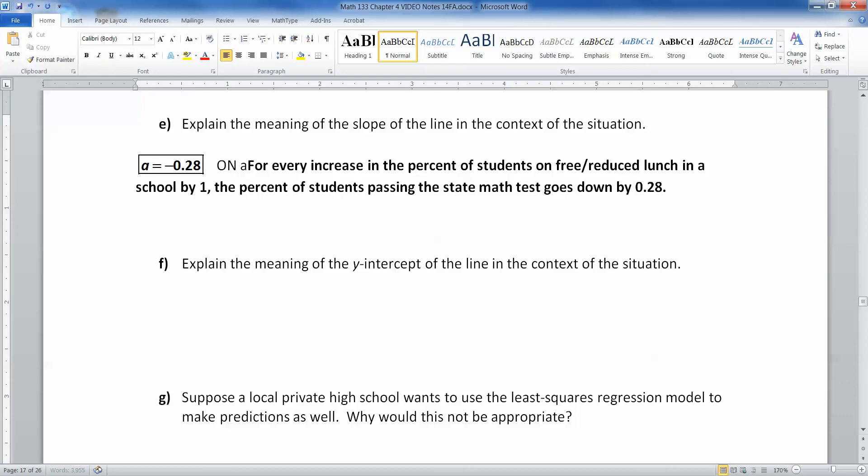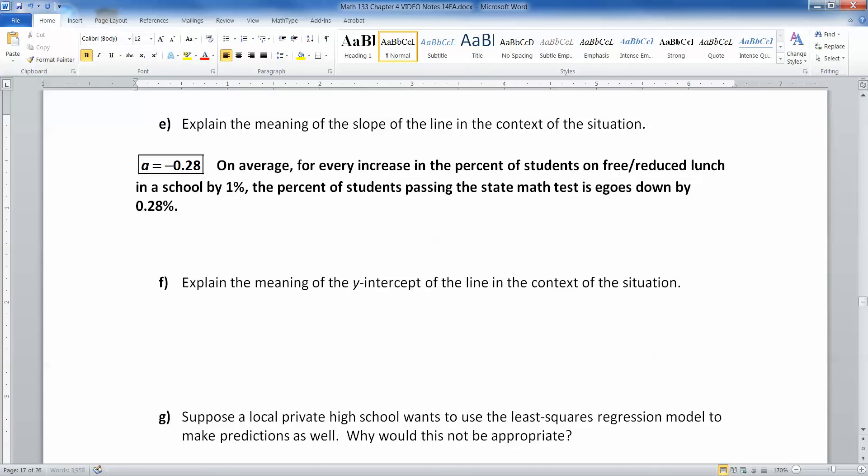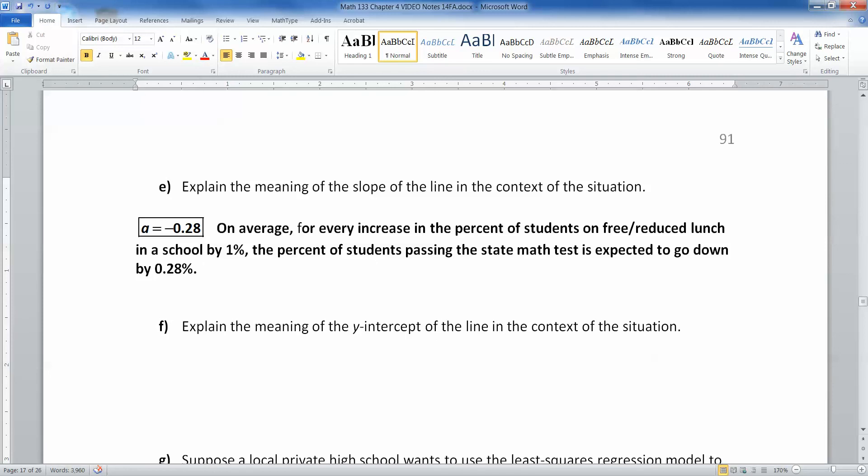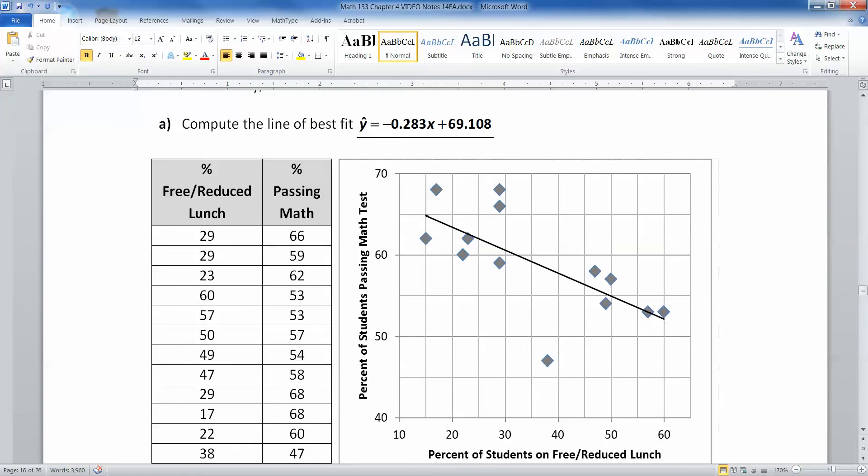So let me go down here and clean this up a little bit. So we would say on average for every increase in the percent of students on free reduced lunch by 1%, the percent of students passing the state math test is expected to go down by 0.28%. I'm trying to be very careful in there. This is not a locked in stone kind of a thing. It's more you're describing the relationship. Let me look back at the line here. You see a negative slope here, which means as percent of free reduced lunch increases, we expect the percent to pass math to decrease. It doesn't mean that it automatically happens exactly that way.